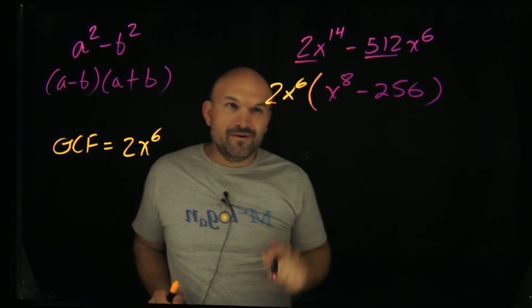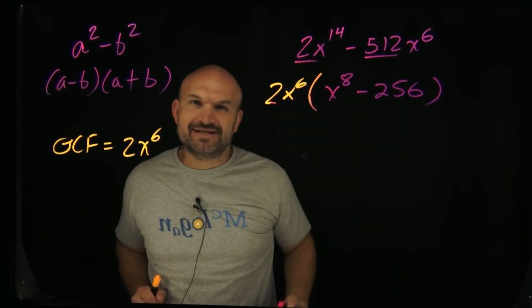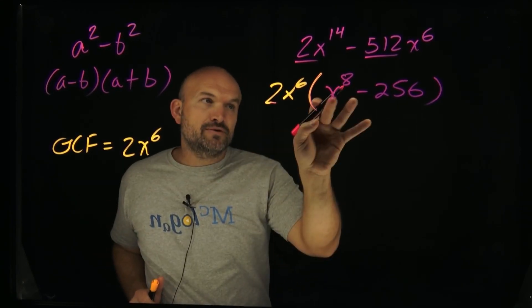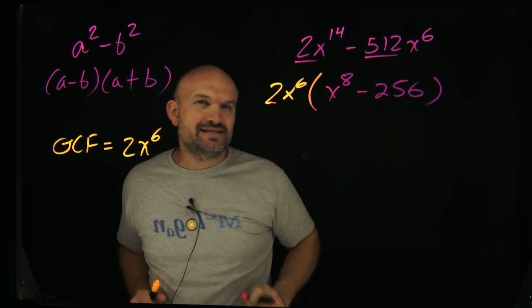Now what I want you to see is, all right, now I know I can rewrite x to the 8th as a square number. That's x to the 4th squared. So I can go and rewrite that. And is 256 a square number?